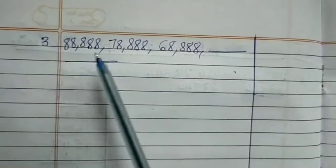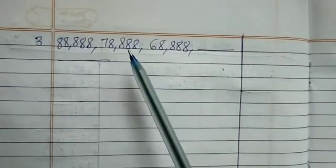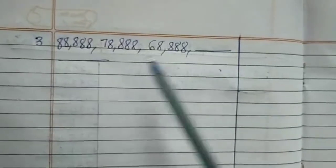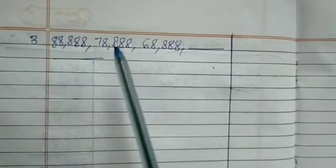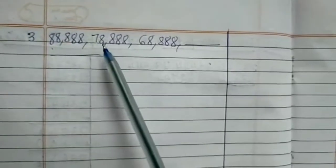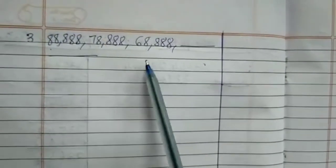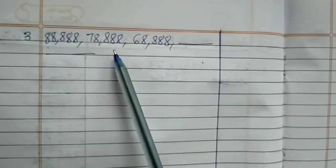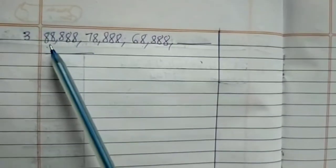Third one: the numbers are 88,888, then 78,888, then 68,888. The fourth and fifth are blank. In this problem, you can see the difference only in the ten-thousands and thousands place: 88,000, 78,000, 68,000. The rest — hundreds, tens, units — are all 888. So we can see the numbers are decreasing: 88 becomes 78. Let's find the difference between the first two numbers.